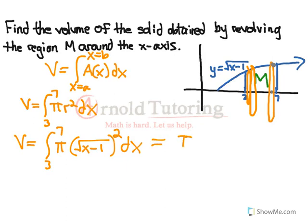The pi can come out front, giving us pi times the integral from 3 to 7 of x minus 1, dx. When we square something under a square root, the square root disappears. Now we're ready to integrate.